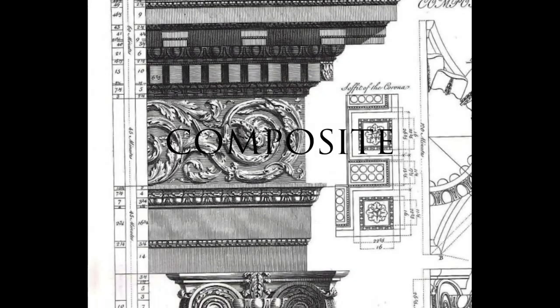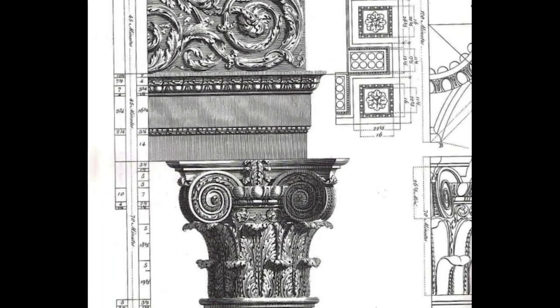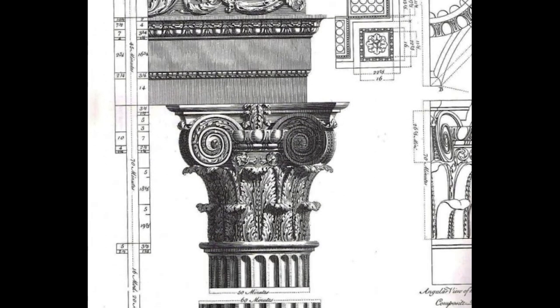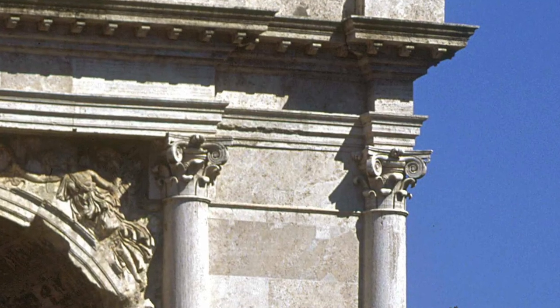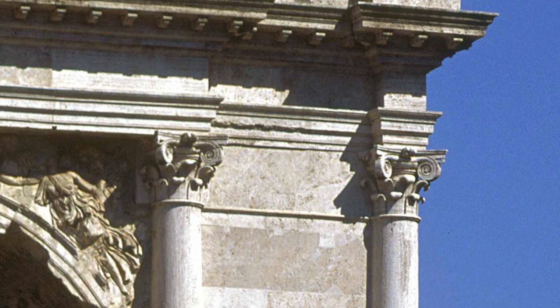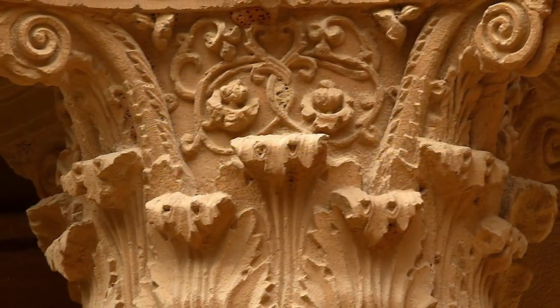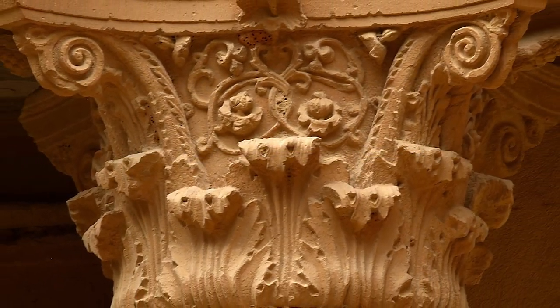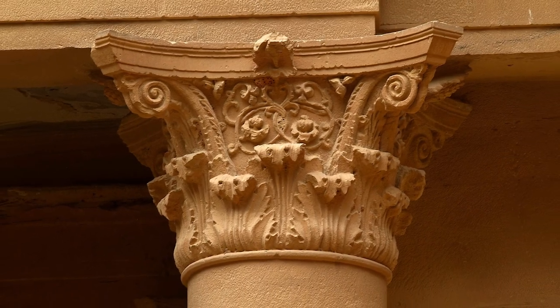The Composite is compounded of the other orders, and was contrived by the Romans. Its capital has the two rows of leaves of the Corinthian, and the volutes of the Ionic. Its column has the quarter round as the Tuscan and Doric order, is ten diameters high, and its cornice has dentals or simple medallions. This pillar is generally found in buildings where strength, elegance, and beauty are displayed.